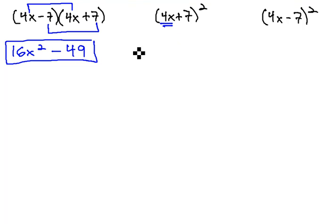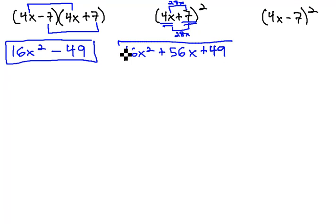We do start by squaring the first term. 4x squared is 16x squared, and then we look at the product twice. 4x times 7 is 28x, and another 28x is 56x. Finally, we square the 7 to get 49, and we have our final solution.